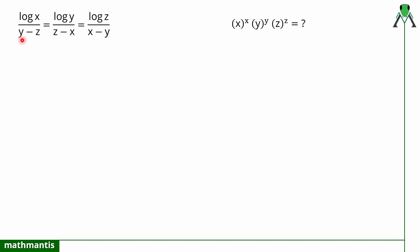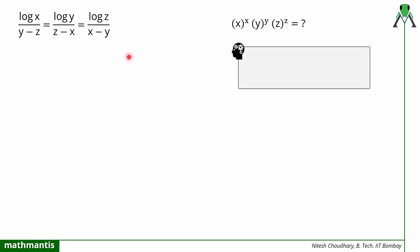To solve this problem we will use two properties of logarithm. The first is the power property of log: if there is an argument with a power c, you can bring that value in front of the log, and the reverse is also true — a term multiplied in front of log can be taken to the power. I will use this property because in the question I can see x raised to power x, so I need to generate the power x for variable x, power y for y, and power z for z.